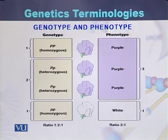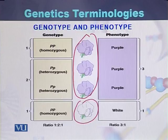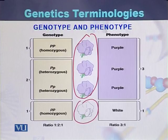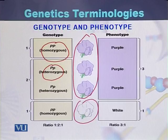Taking an example of genotype and phenotype: if we have three purple color flowers and one white color flower, these represent the phenotype. The purple color has two types of genotype — one is homozygous, represented as capital P and capital P, while the other is heterozygous, represented as capital P and small p. So purple color has two types of genotype: homozygous and heterozygous.